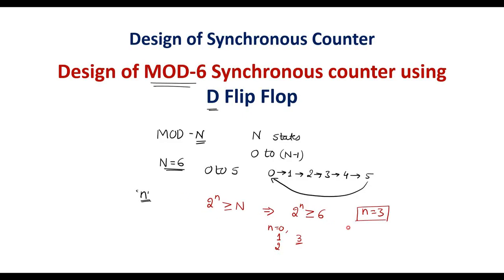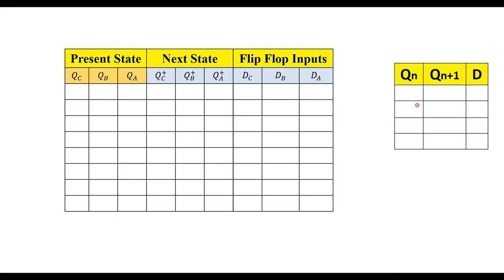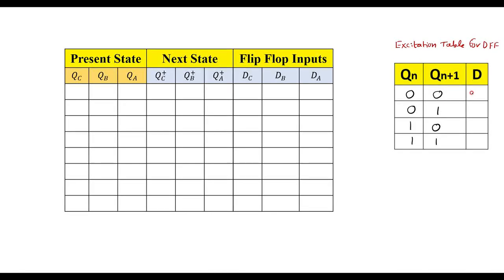The second step is to write the excitation table for the D flip-flop. In the excitation table, Qn is the present state, Qn+1 is the next state, and D is the flip-flop input. The possible input combinations are: 0→0, 0→1, 1→0, 1→1. In a D flip-flop, output follows input, so the value of D is the same as the next state. This is the excitation table for the D flip-flop.